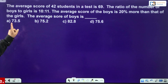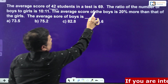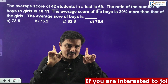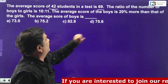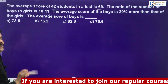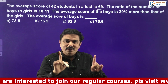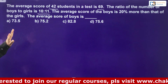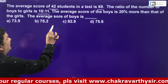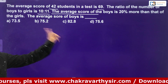What exactly they have given? The average score of 42 students in a test is 69. Keep it in your mind: total number of students 42 and the average is 69. Next, the ratio of number of boys to girls is 10 is to 11. Remember that as well. Boys to girls ratio is 10 is to 11. Next, one more clue: the average score of boys is 20% more than that of girls. This is the heart of the question.